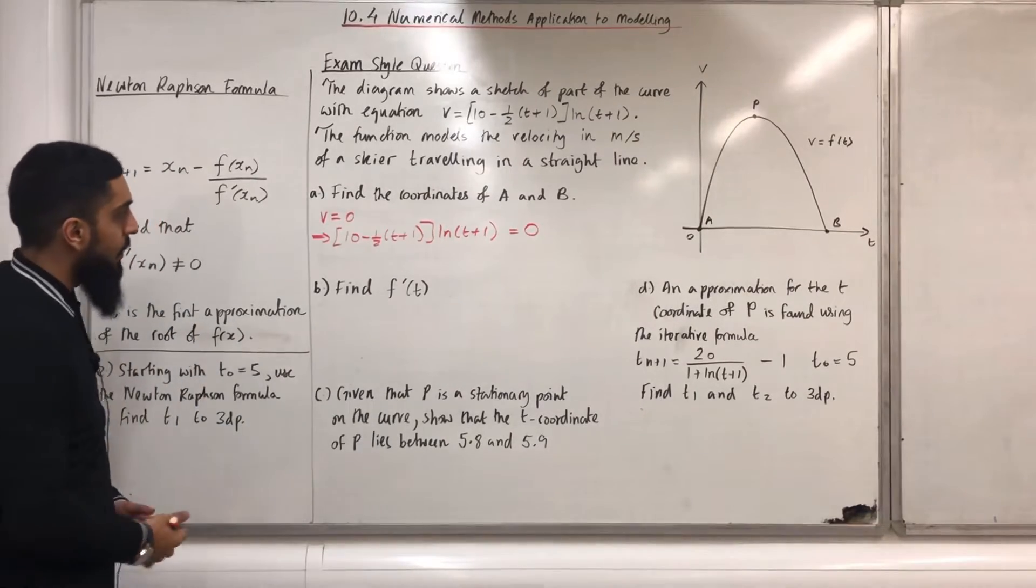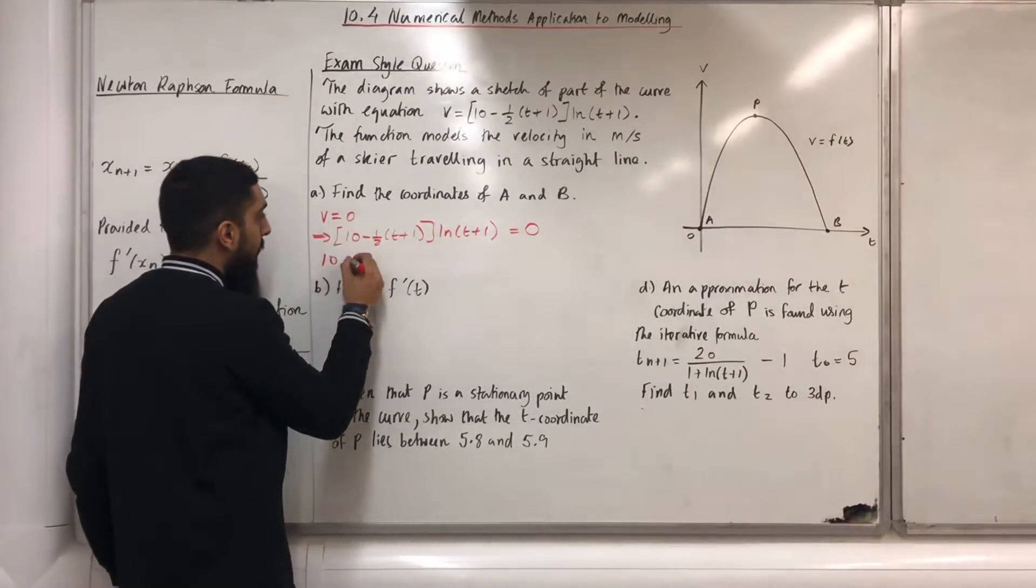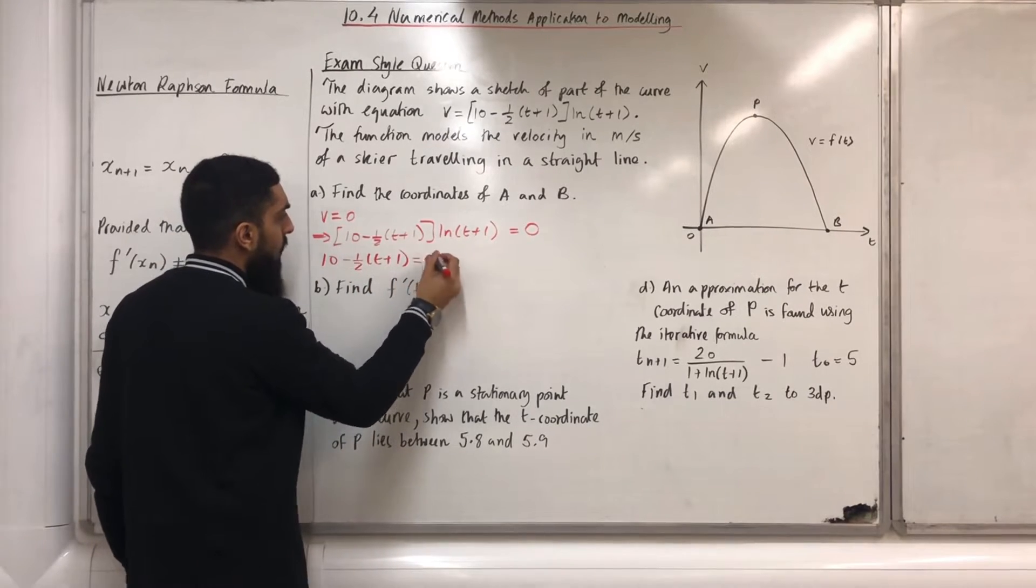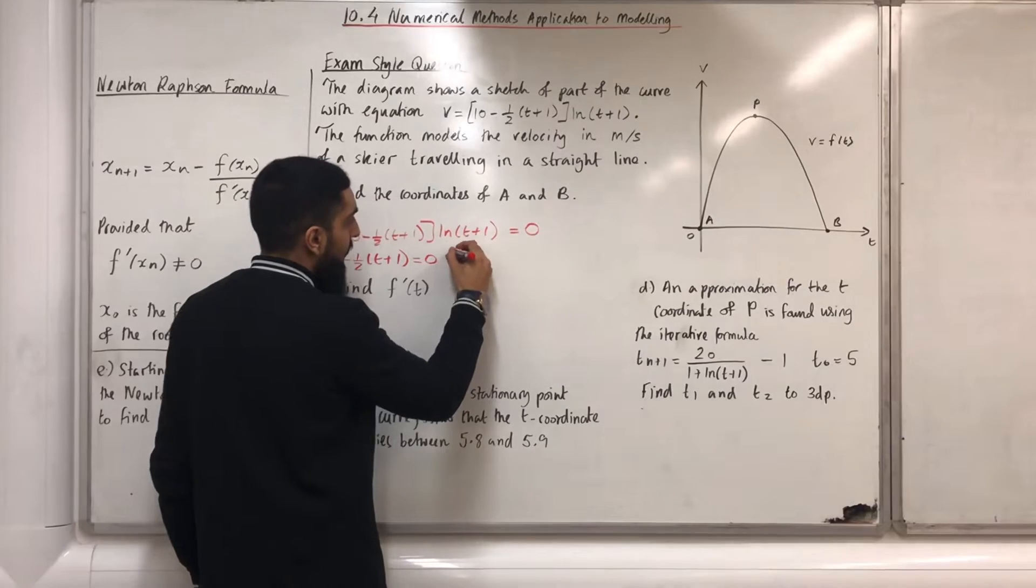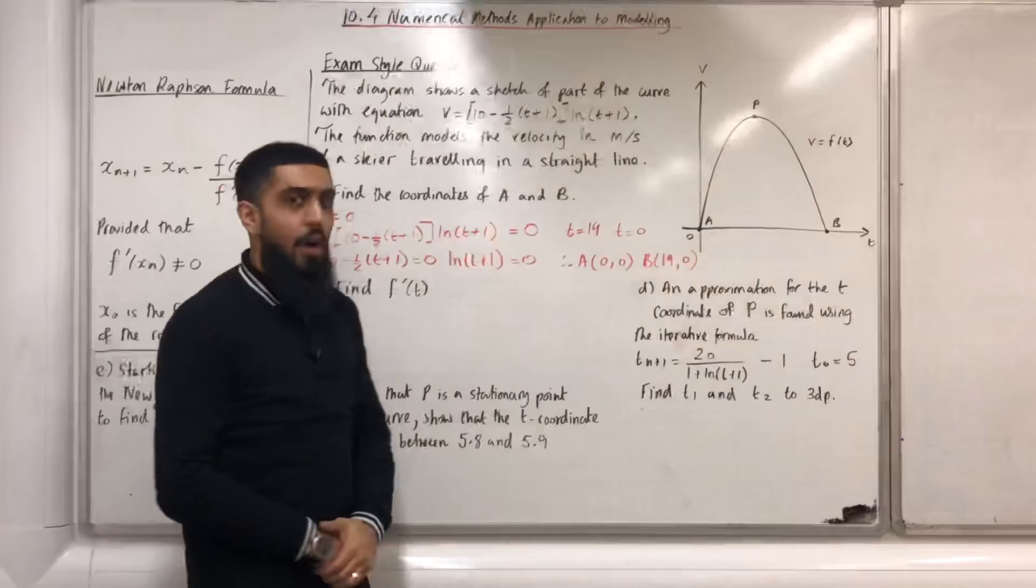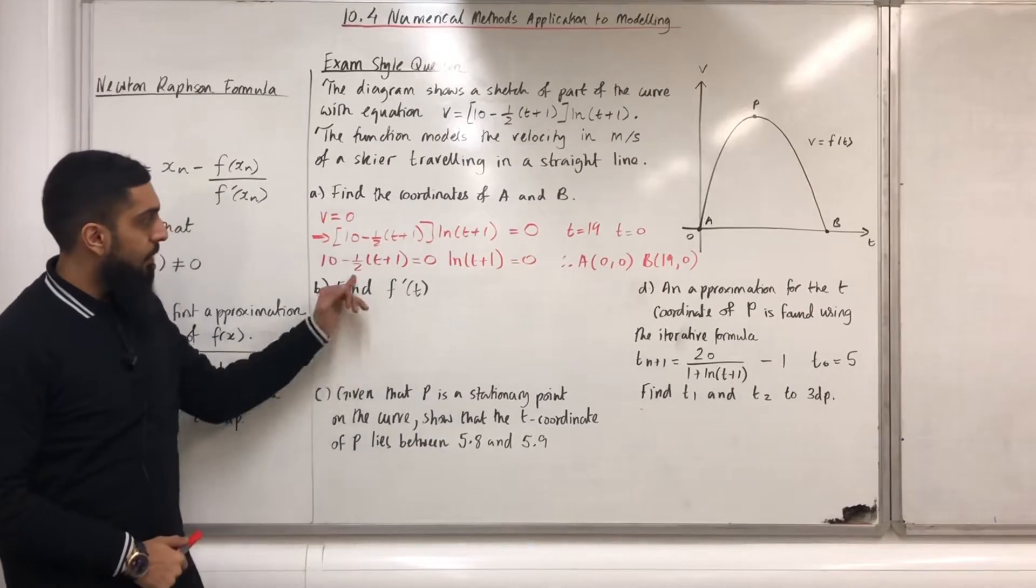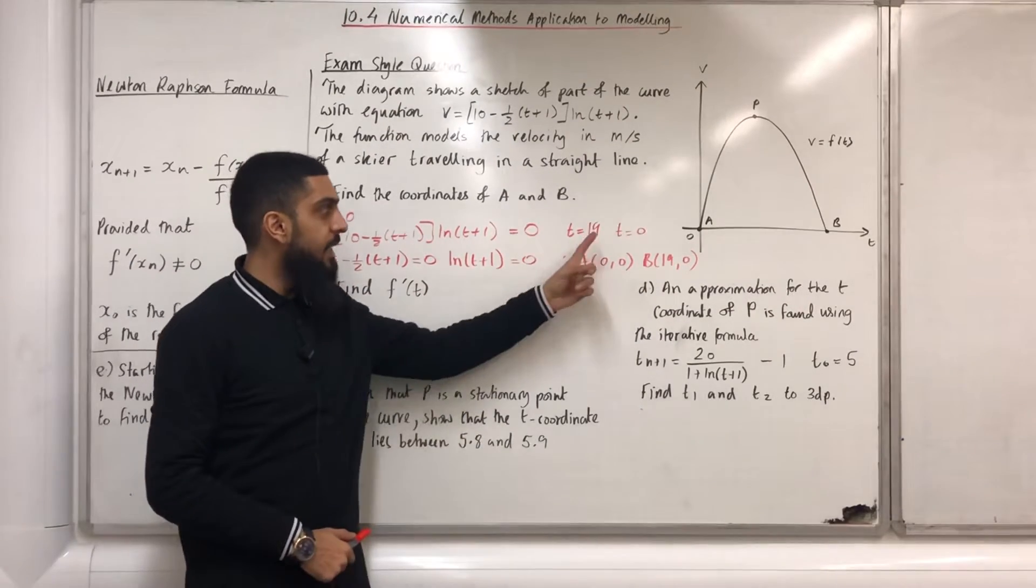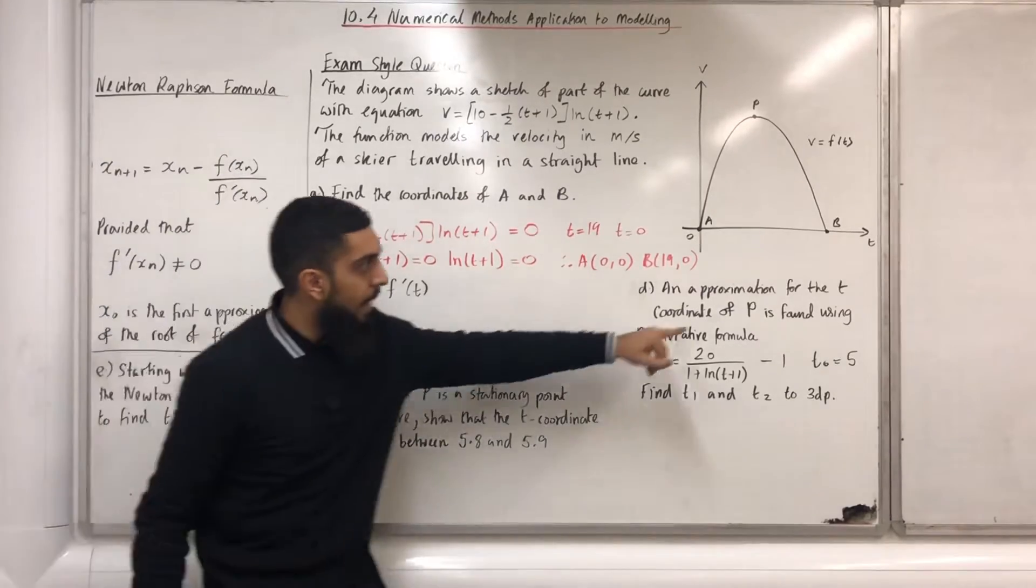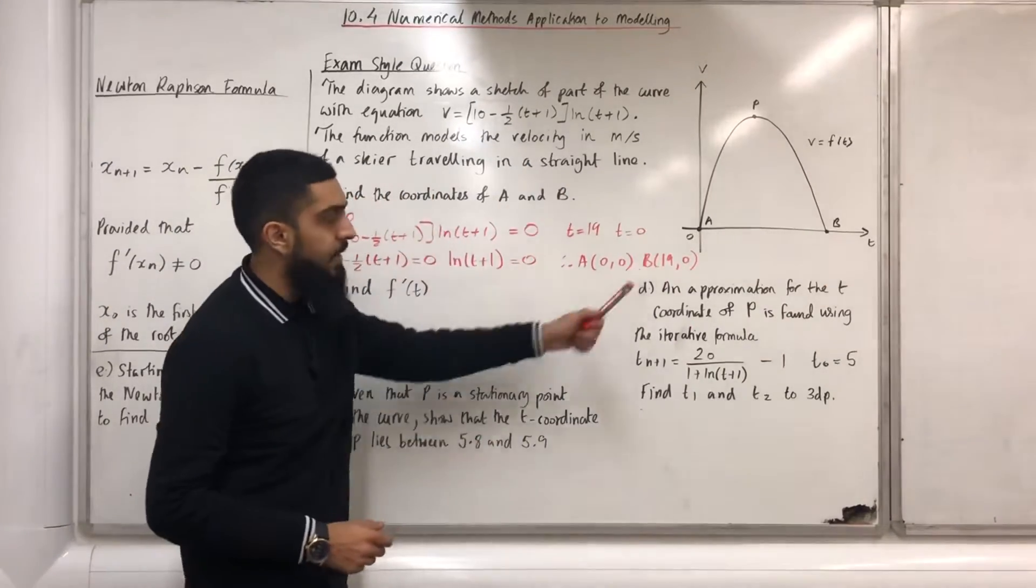The first equation is 10 - 0.5(t+1) = 0. The second equation is ln(t+1) = 0. After solving the two equations, we end up with t = 19 and t = 0. So at point A, the coordinate is (0,0) and at point B, the coordinate is (19,0).